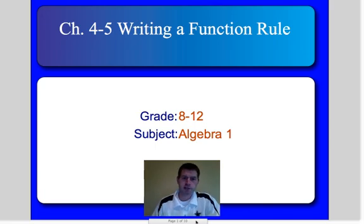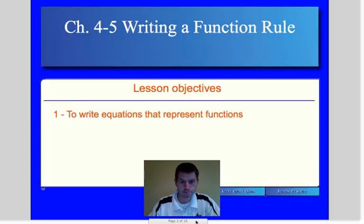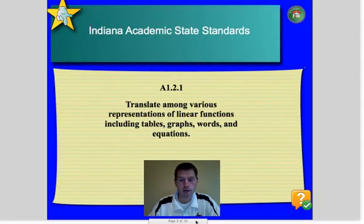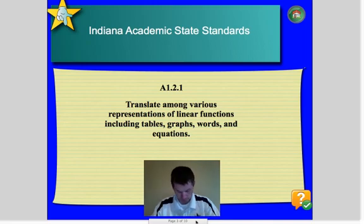Okay, well today we're going to talk about chapter 4-5, which is writing a function rule. We're going to go from story problems to writing an equation. So I know this is going to be everybody's favorite subject. Okay, so the objective is to write equations that represent functions. A1.2.1 is our standard for today.